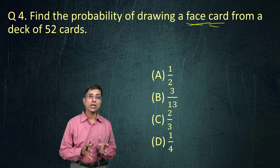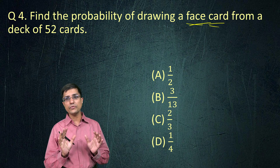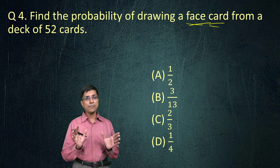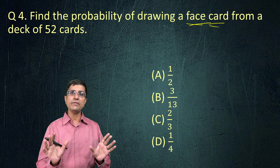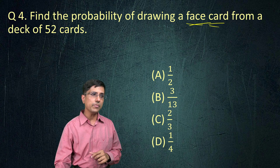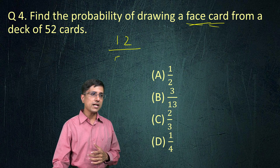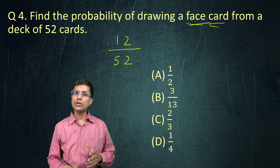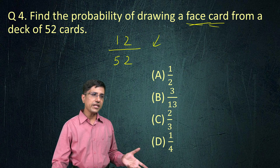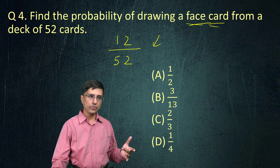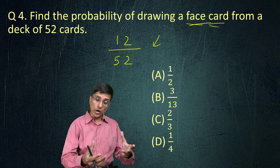How many face cards are there? There are three in each of the suits: club, diamond, heart and spade. Each suit has three face cards, so the total number is 12. The total number of cards is 52. The fraction 12 over 52 represents the fraction of face cards with respect to the total number of cards.